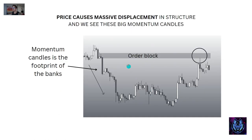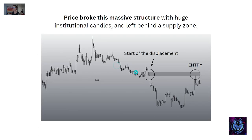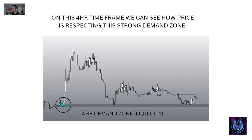Price causes a massive displacement — you can see these massive institutional candles, a huge break in structure — and it leaves behind this indecision candle which we mark out. This becomes an extremely valid zone. Here's a closer example: price broke massive structure with huge institutional candles and massive volume, leaving behind the supply zone, which is the indecision candle at the start of the displacement. Imagine the bank came in, placed a massive order, and that order created this ripple — this massive displacement.